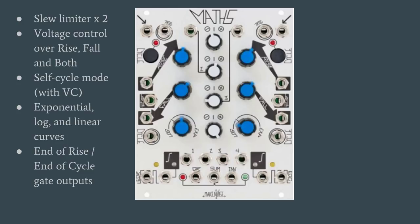Let's start with the individual components of Maths. The first is a pair of slew limiters. A slew limiter integrates or slows down the voltage coming into it. In the case of Maths, its ability to be an envelope generator comes from the slew limiter — the envelopes generated are actually the slowed control gate inputs. Two slew limiters make up channels one and four, probably the most used channels. Voltage control over the rise or attack parameter as well as the fall or release parameter are necessary.